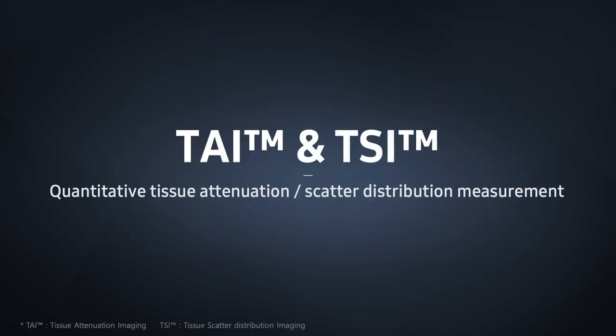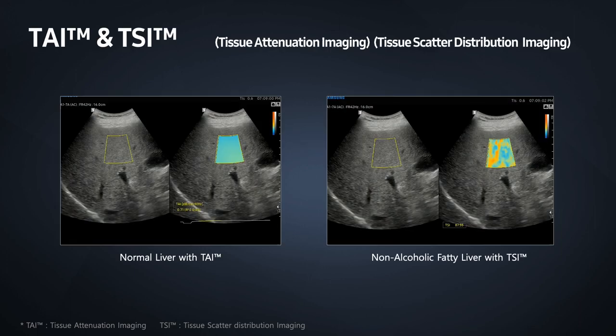TAI and TSI: Ultrasound energy is subject to attenuation as it propagates through tissue. The amount of attenuation experienced is dependent upon the media it travels through. In addition to attenuation, the propagation of sound through liver also generates a multitude of small diffuse scattered reflections. It is these small scattered reflections that comprise the liver parenchymal image. Tissue attenuation imaging (TAI) provides a quantitative measurement of attenuation as sound travels through liver parenchyma.